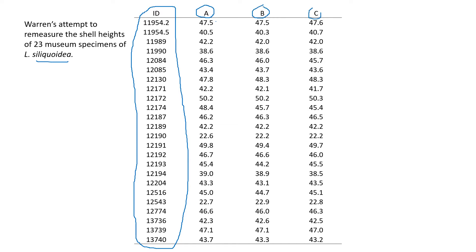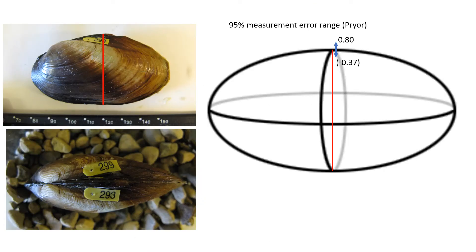And here's the values for those measurements. So this specimen ID number 119542 on the top was, I came up with 47.5 for a shell height on occasion A, 47.5 on occasion B, and 47.6 on occasion C.